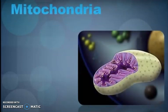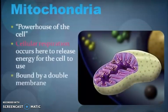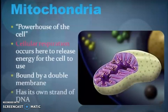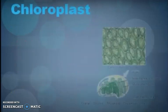Mitochondria is one of the most important cell organelles, known as the powerhouse of the cell. It helps in cellular respiration, is bounded by a double membrane, and has its own strand of DNA, which is a genetic material.